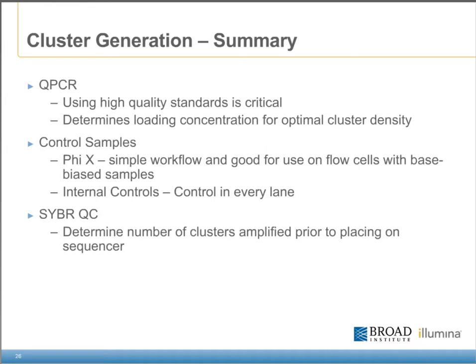Let's review a few of the critical points in our cluster generation workflow. First, utilizing high-quality standards is critical to ensure optimal qPCR results. Using qPCR is a very reliable method of quantifying the amount of library required to hit target cluster densities. Secondly, there is more than one type of control sample to use for process control and downstream troubleshooting — we use internal controls in every lane and only use a PhiX lane for occasional flow cells with base-bias samples or unknown novel samples. Third, using a CyberQC is a great way to verify successful cluster amp and is a simple way to estimate cluster counts on the flow cell.